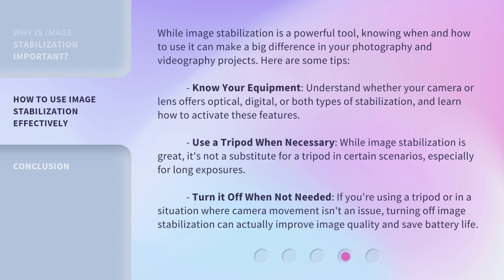Turn it off when not needed. If you're using a tripod or in a situation where camera movement isn't an issue, turning off image stabilization can actually improve image quality and save battery life.